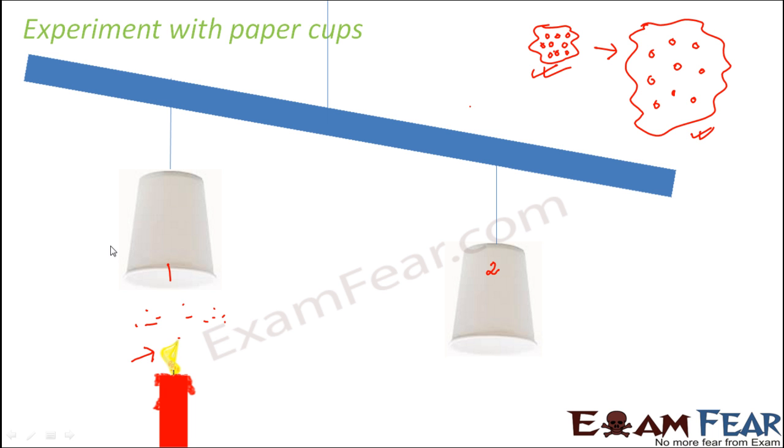Here, the air present was heated up, expanded, became lighter, and that's why it went up. As it rose up, it pushed cup one in the upward direction, and as a result, the entire balance got disturbed. This is another experiment which tells us very beautifully how air expands when heated.